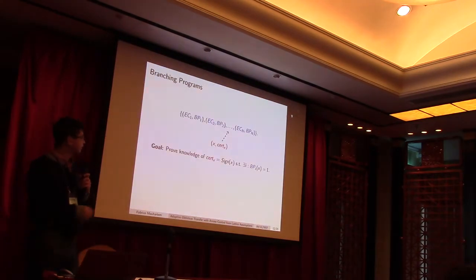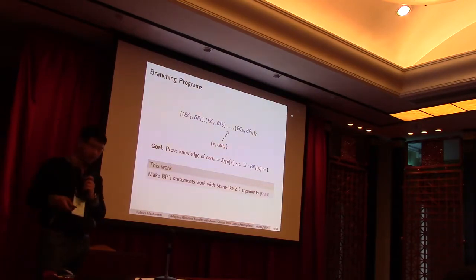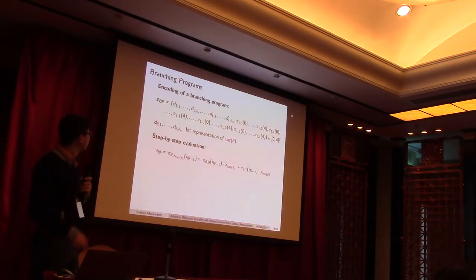So, for instance, here this walk is accepted because it starts at zero in the first level, and ends at zero in the last level. But this walk is not, because it ends at three in the last level. And why do we use this structure? It's because it's equivalent, and if we have a pretty long branching program, thanks to Barrington, we have an expressivity as NC1.